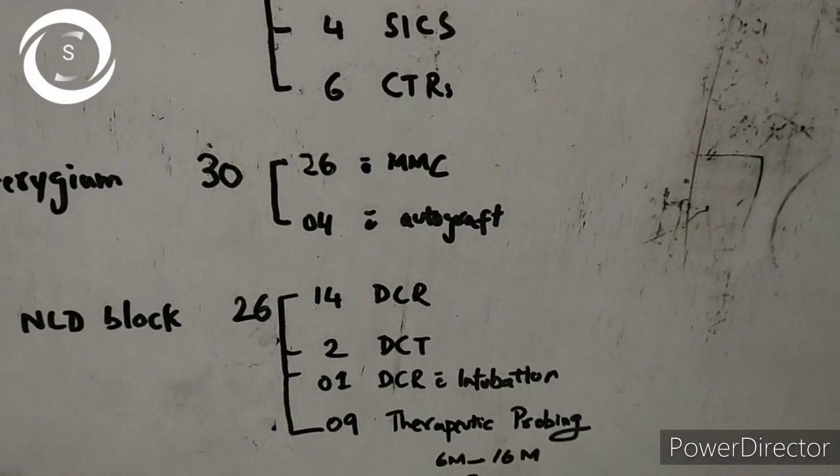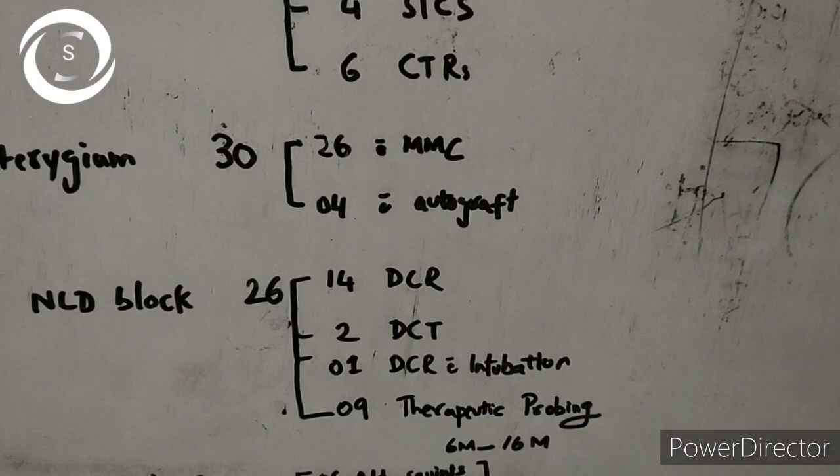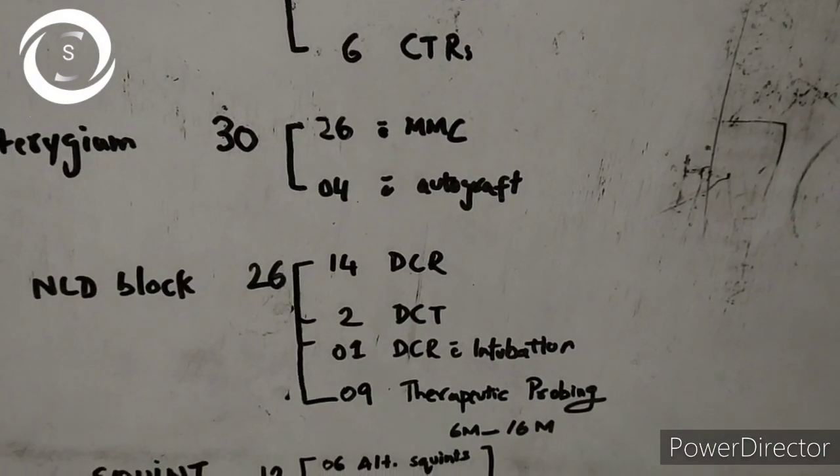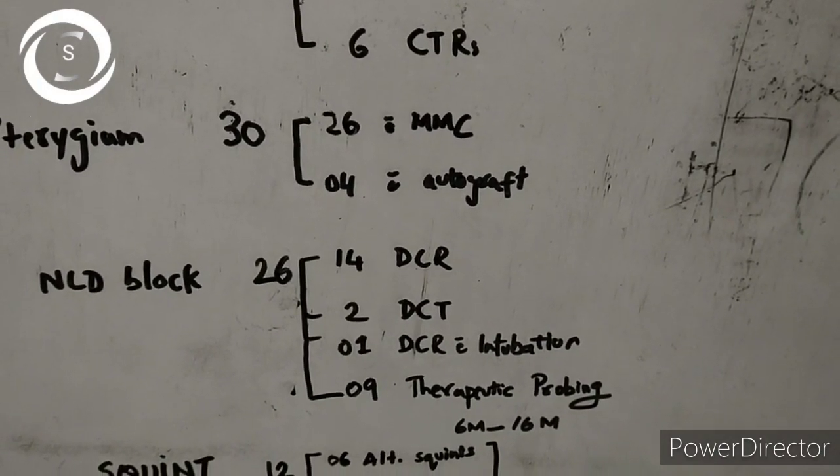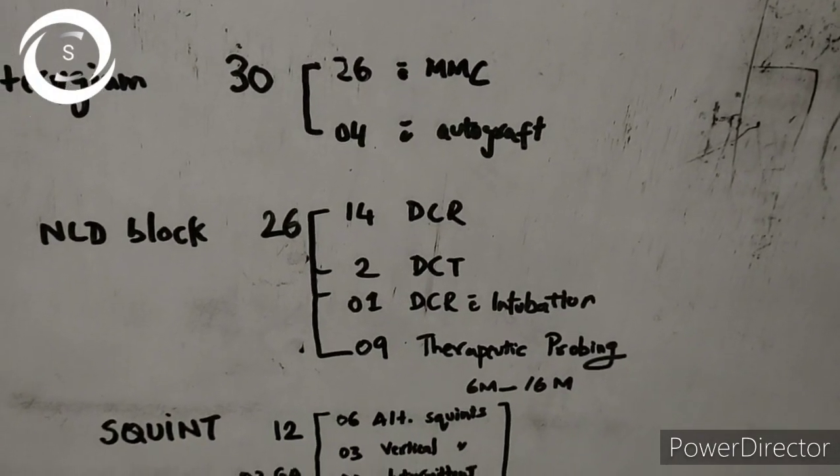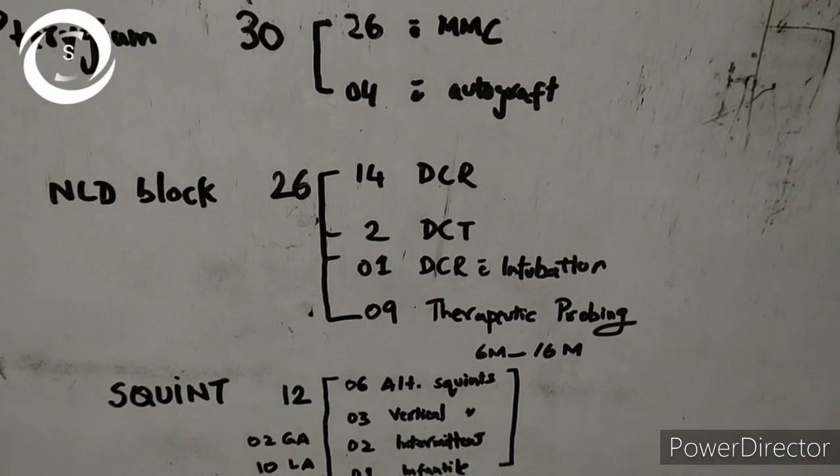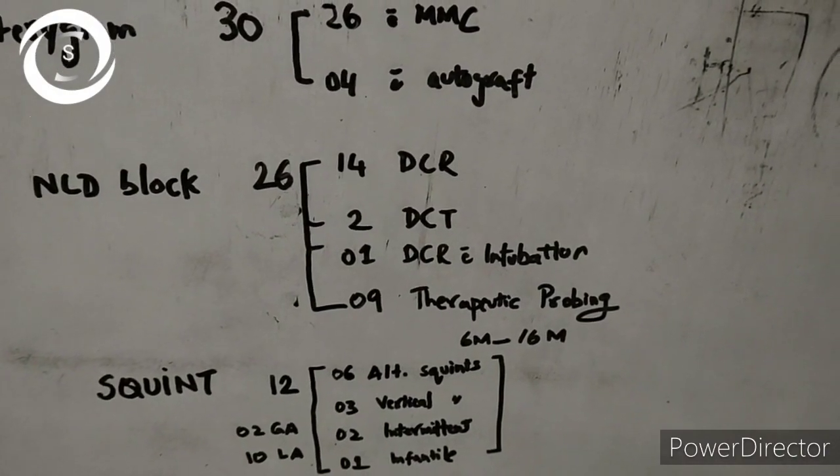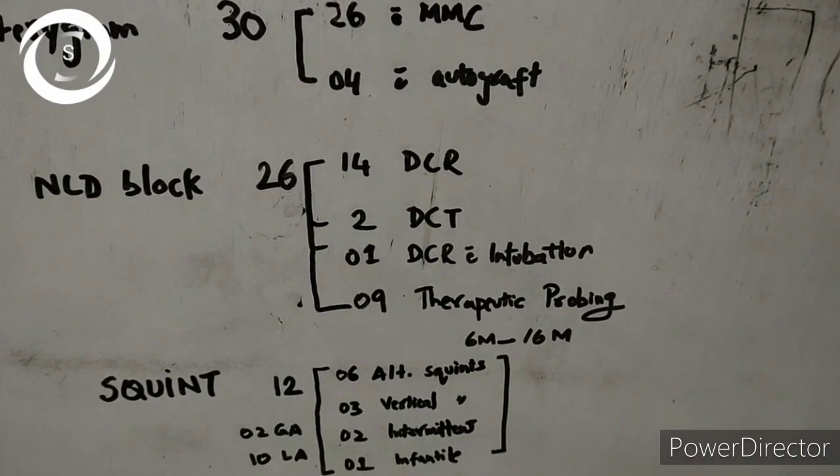I have also performed 12 squints, out of which 10 were in local anesthesia, 2 in general. 6 were alternate iso or exo squints, 3 vertical squints inferior oblique recessions and one hypotropia, 2 intermittent and one infantile.